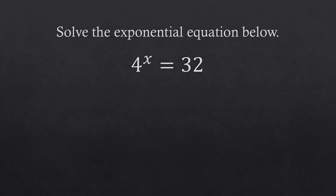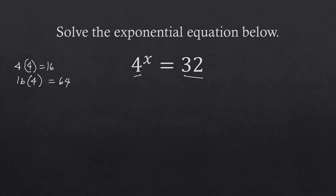Next problem: 4 to the power of x equals 32. Notice that 32 cannot be expressed as a power of base 4, since powers of 4 give 4, 16, 64 — skipping 32. So instead, we find a common base: 4 can be written as 2 squared, or 2 to the power of 2, raised to the power of x. For 32, we express it as a power of 2 using a factor tree.